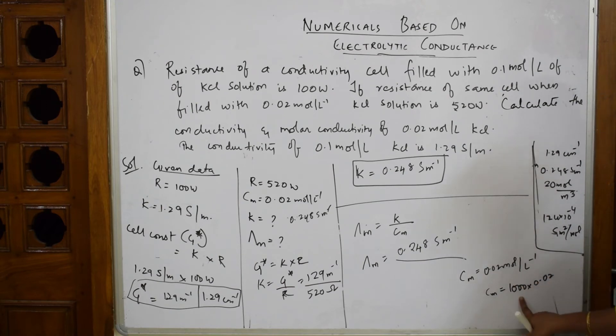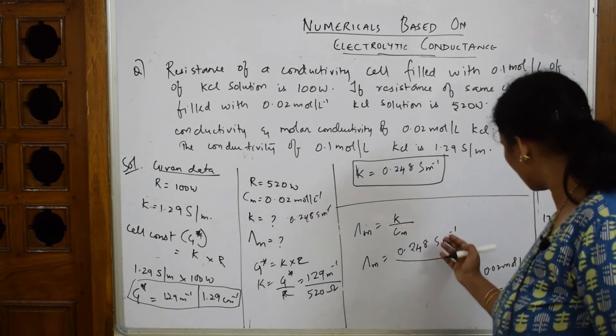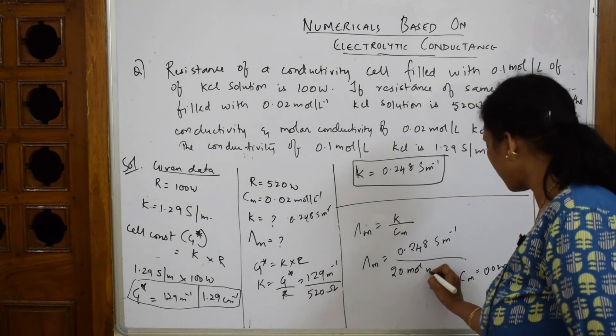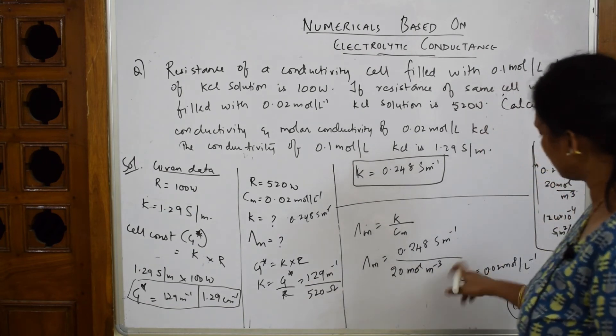When you multiply 0.02 × 1000, the concentration becomes 20 mole per meter cubed. Now I've got Cₘ = 20 mol/m³, so both values are in consistent units.